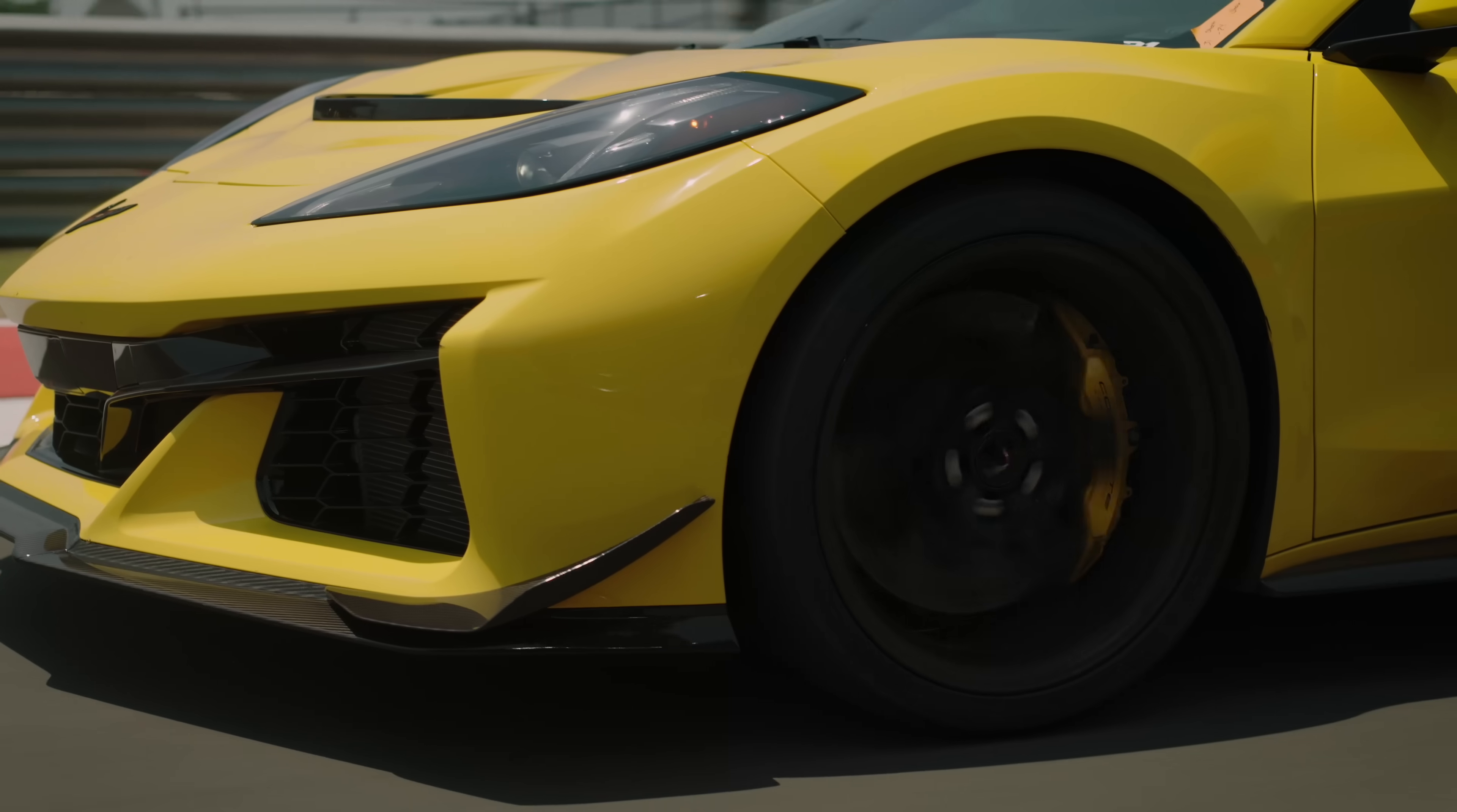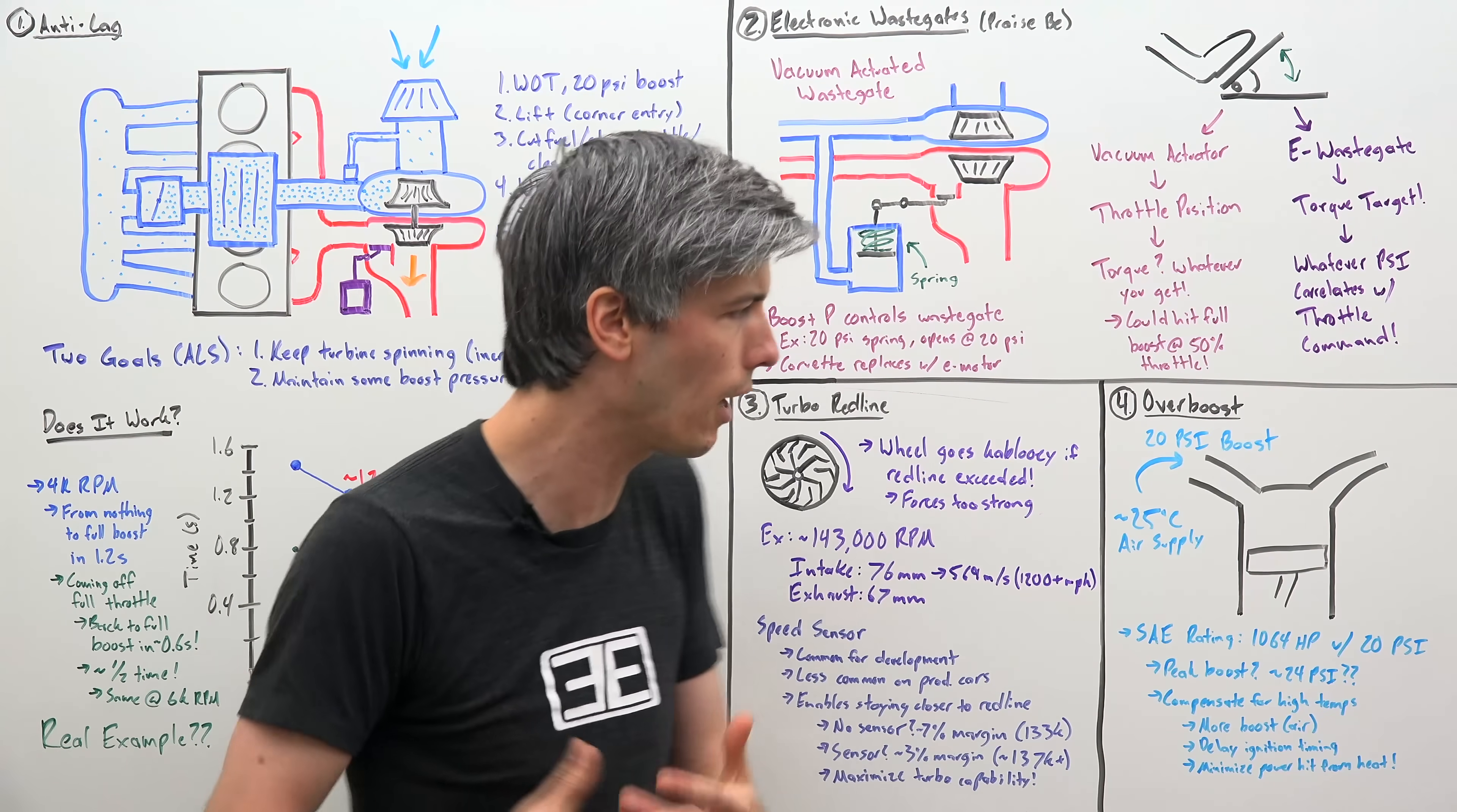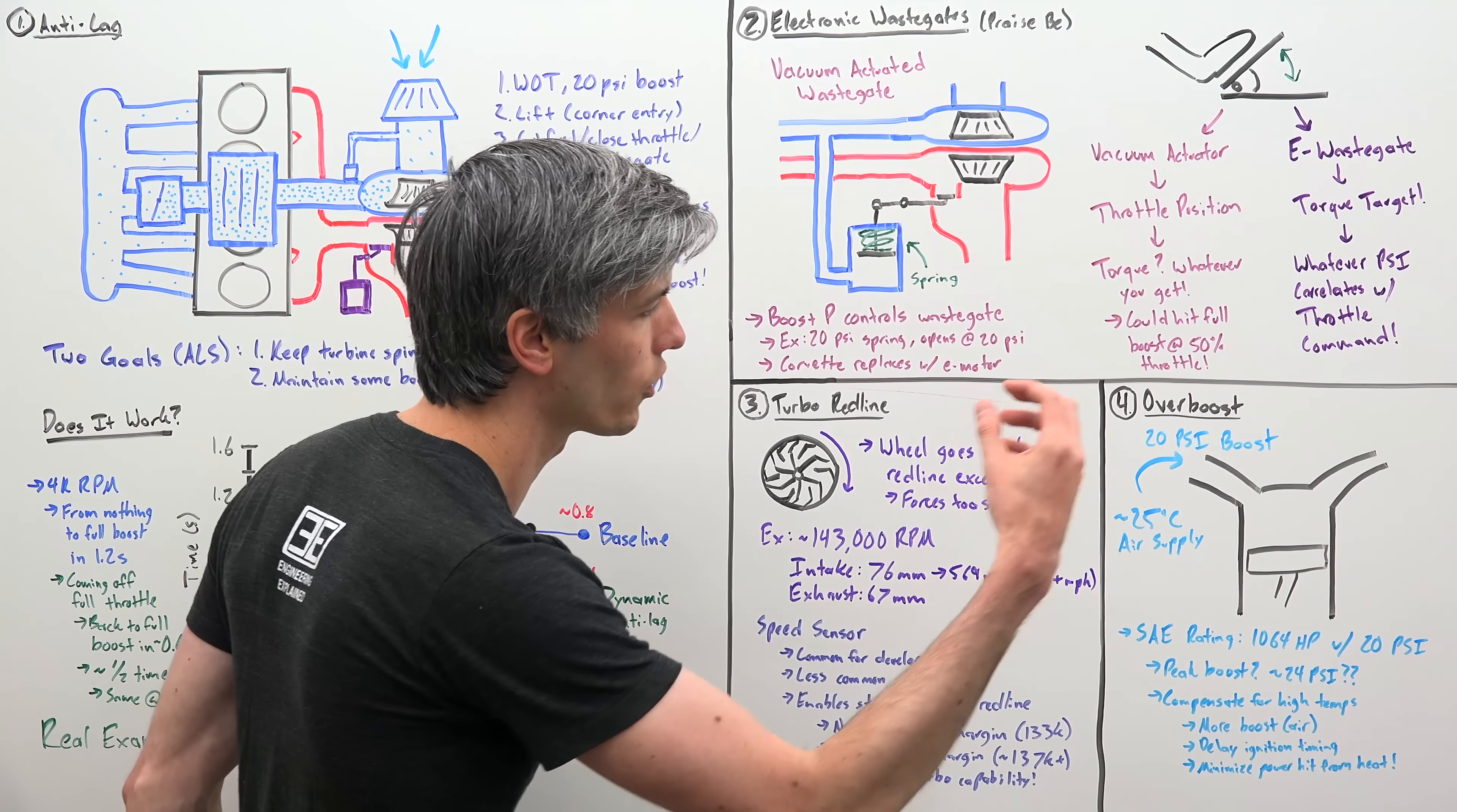But what about when you're running around outside and it's much hotter than that? Like when I was track testing this at COTA, Circuit of the Americas in Austin, Texas, and it was about 100 degrees outside. Well, in order to compensate for the higher ambient temperatures, of course cooler air more dense, more oxygen more power, the turbocharger can force more air into the engine because it's hotter air, less oxygen.